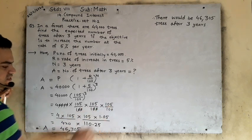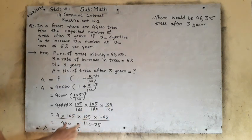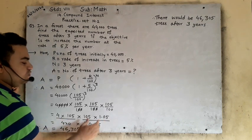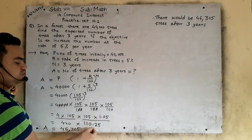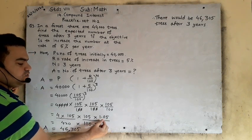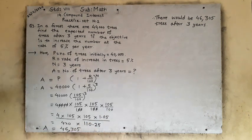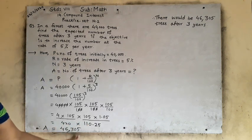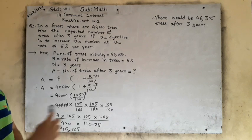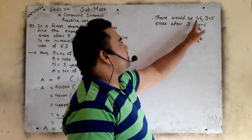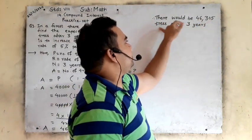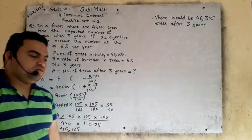After 2 digits there should be a decimal point, because here after 2 digits there is a decimal point. So whatever answer comes, after 2 digits you will give the decimal point. Multiply these two — the answer will come 46,305. So, how many trees will be there in that forest after 3 years? Therefore, there would be 46,305 trees after 3 years. I hope you understood how to solve this — every calculation is very much easy.